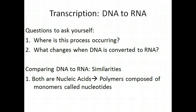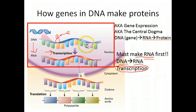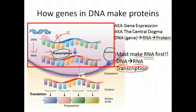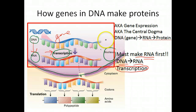Some questions to ask when going from DNA to RNA: where does this process take place? Looking at the diagram, everything for transcription occurs inside the nucleus. You can see the nuclear envelope around here. So this conversion from DNA to RNA — the process called transcription — is occurring in the nucleus. That's important when we get to the second part.